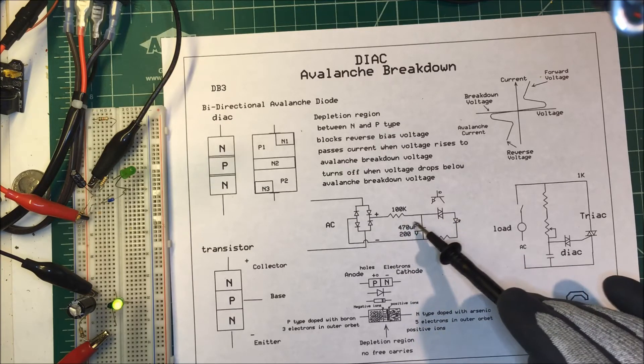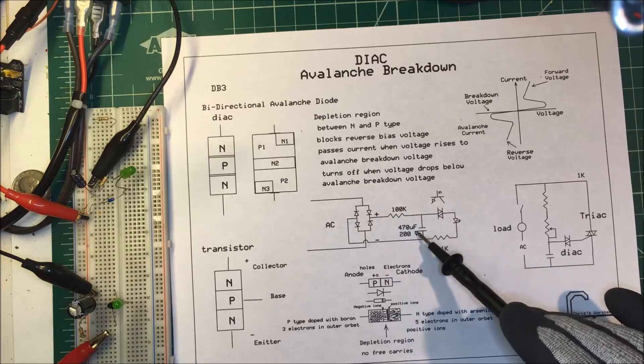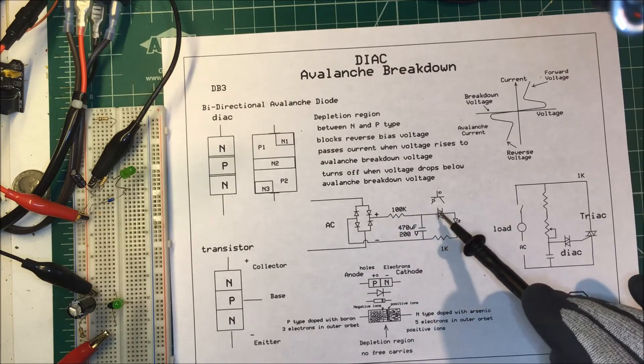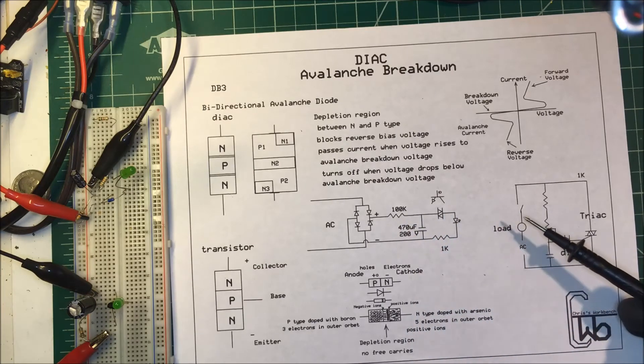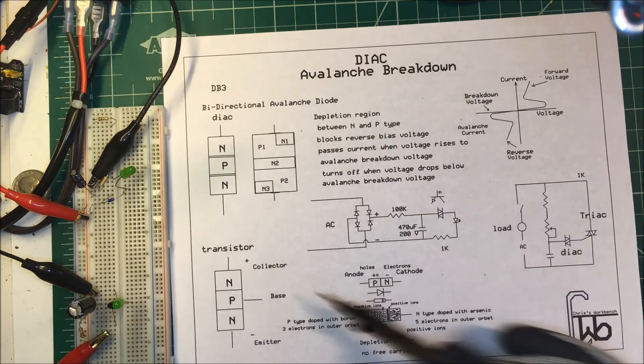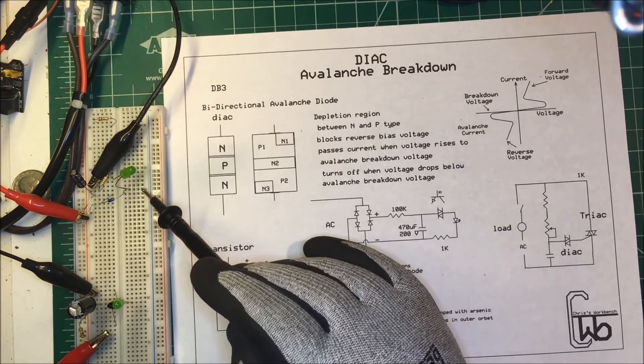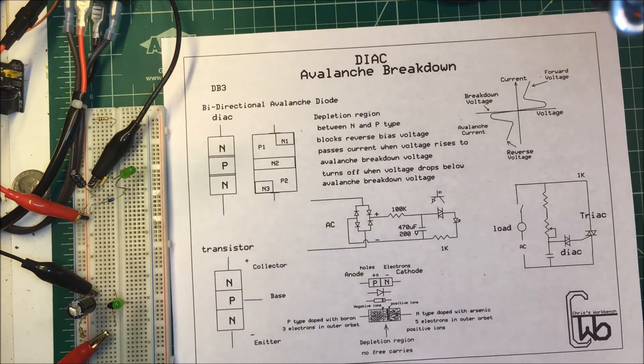And it'll shut off and then the capacitor will charge again and then break down again so it should be flashing its LED. Over here we can see that this one's at 32 volts and the LED is flashing.